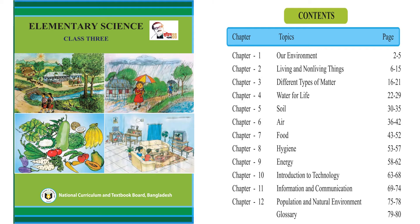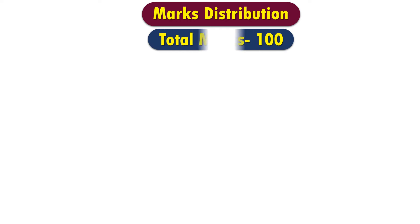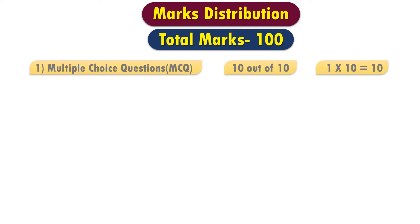Now I am going to show you the total marks distribution for this subject. In Class 1 and 2 you answered 50 marks in science, but from Class 3 you have to answer 100 marks. First, you have to answer Multiple Choice Questions, known as MCQ, in Part 1 — 10 out of 10 questions, with every question worth one mark, giving a total of 10 marks.